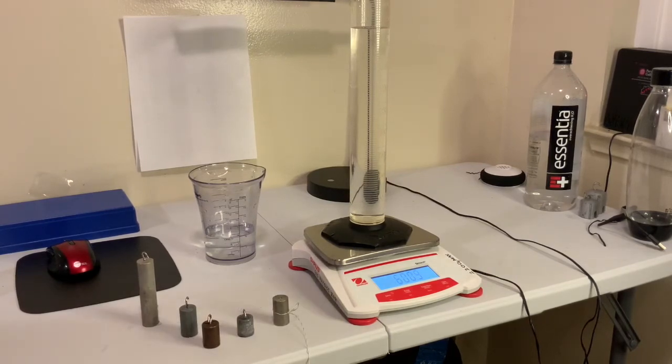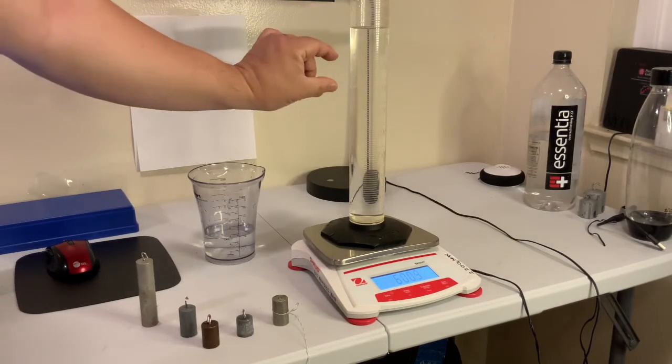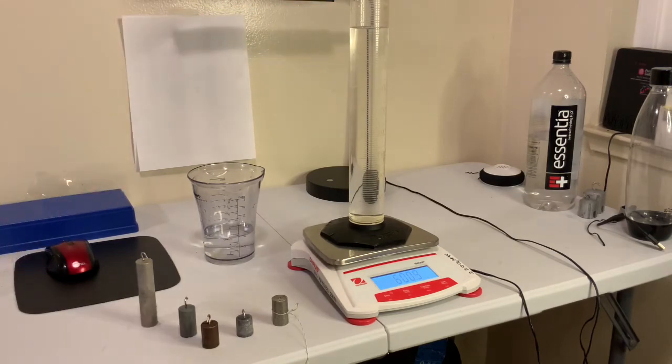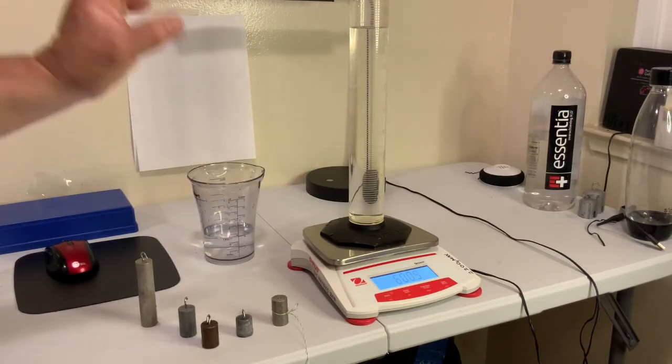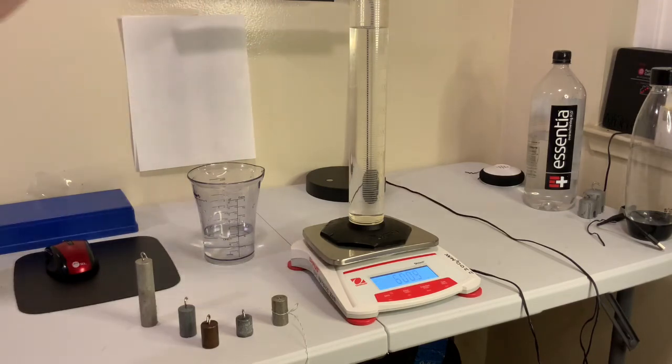Archimedes principle is basically talking about how much of the, when we put the sample in there, it turns out that the buoyant force is equal to the amount of water that is displaced by the sample. In terms of the weight of the water that's displaced by the sample. And so that force of the weight downwards of the water that's been displaced by the sample is going to be equal to the buoyant force going upwards.